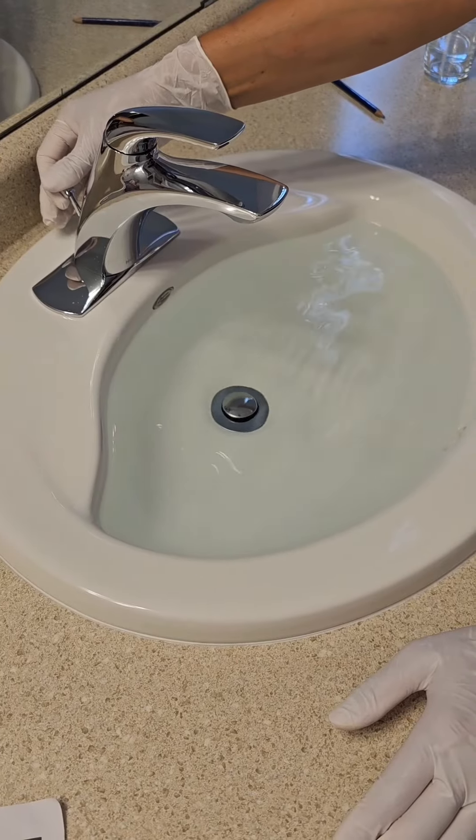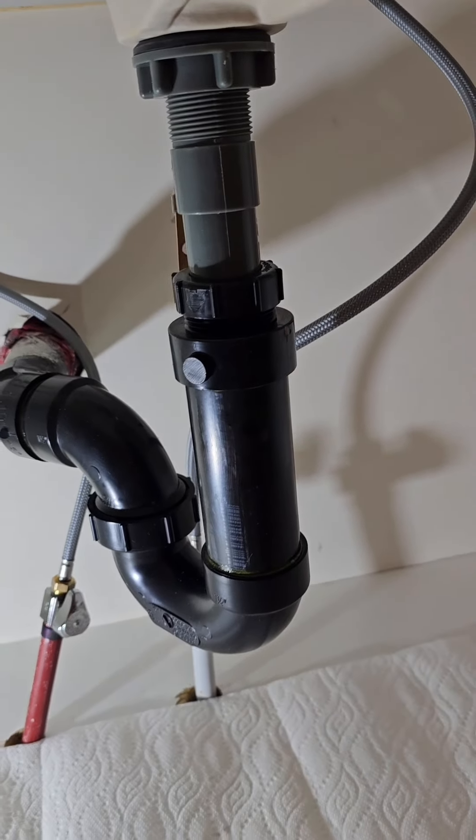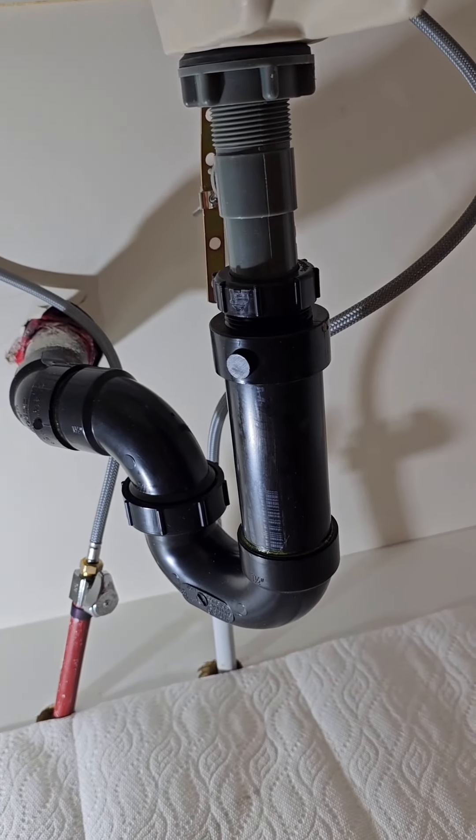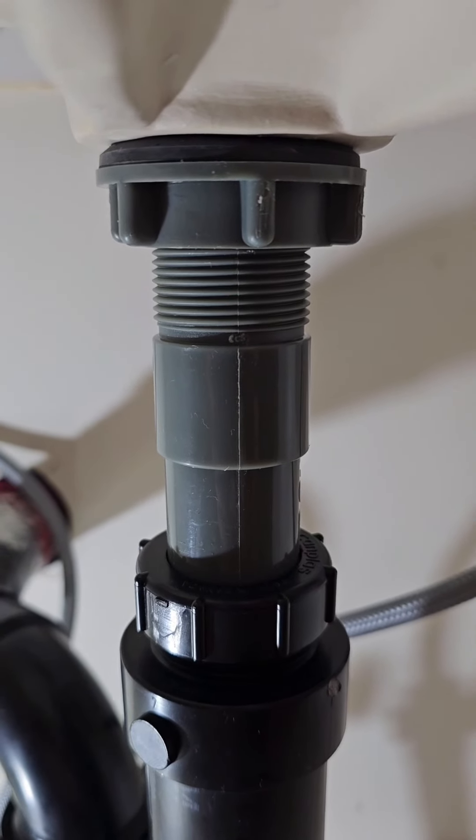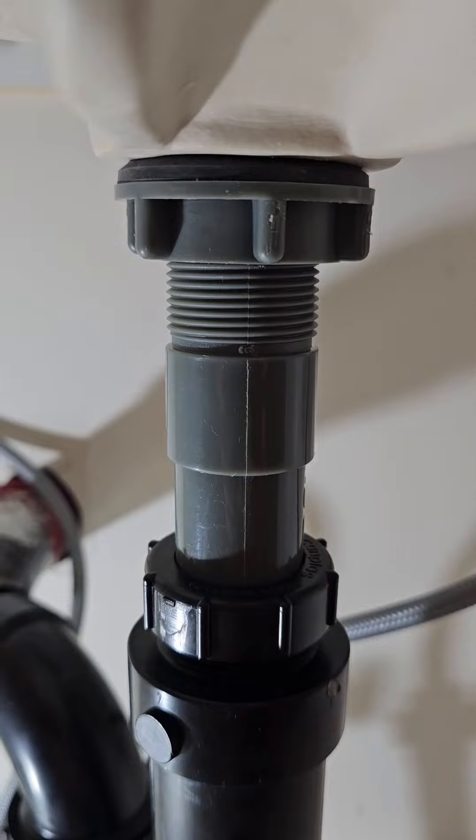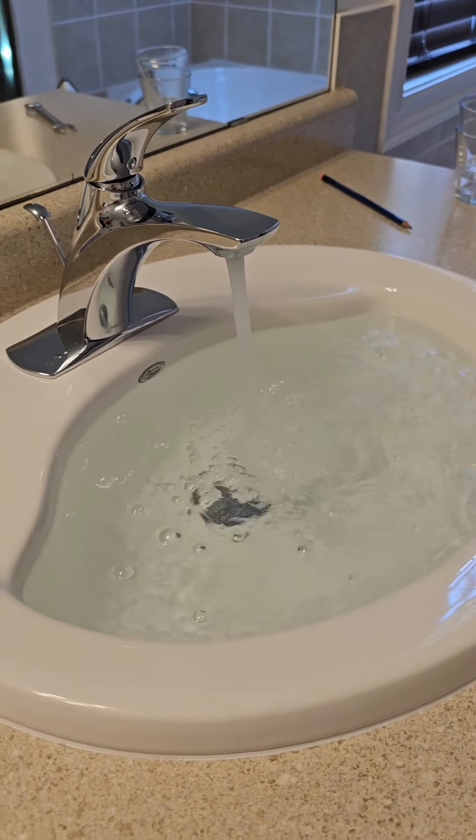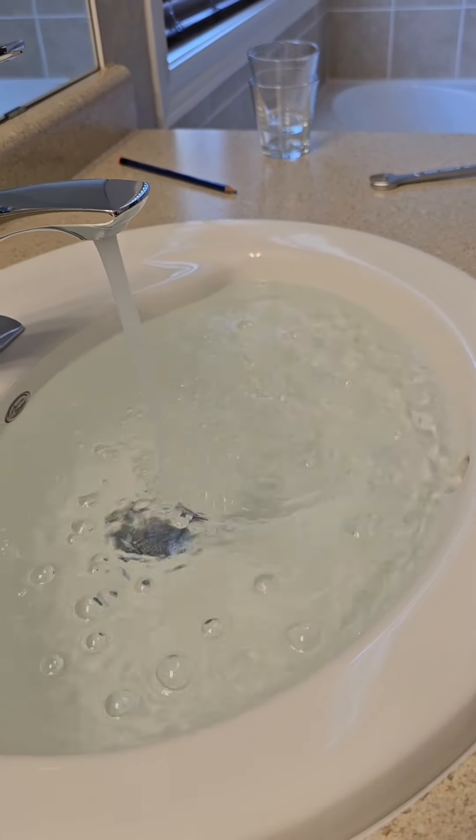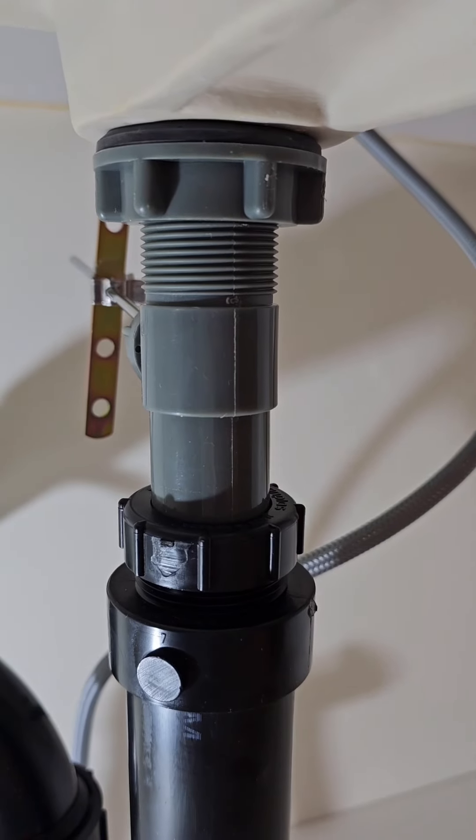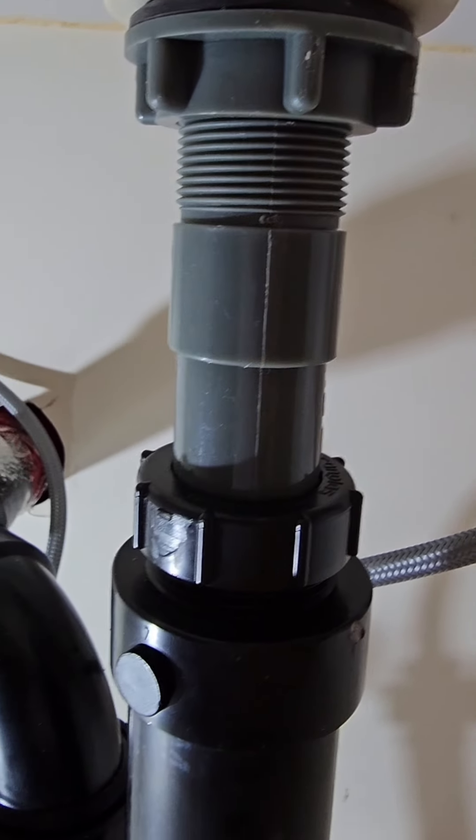Fill the basin and lift the stopper. See if the sudden rush of water leads to any leaks. Luckily, no sign of leaks. Fill up the basin and check the overflow. Make sure to look at the P-trap and gasket. No leaks again.